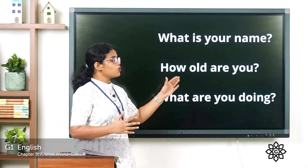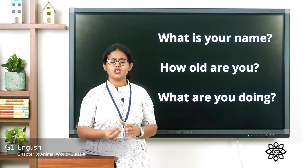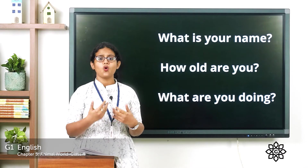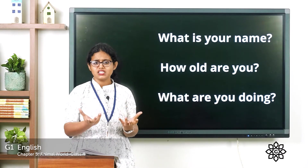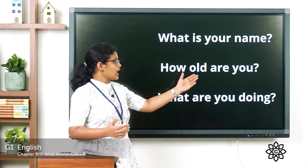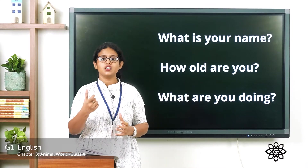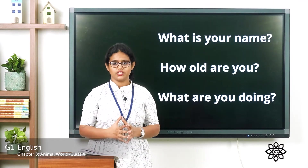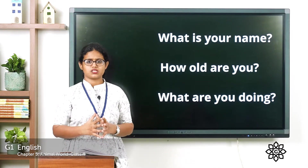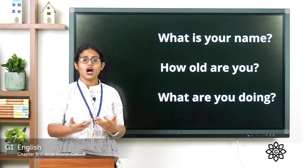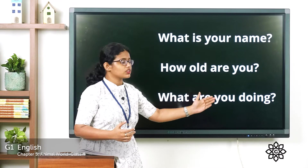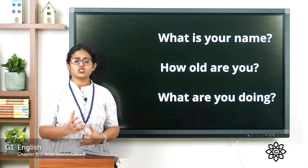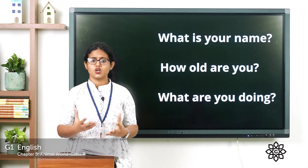The next one: 'How old are you?' This is also a question — it asks what your age is, and there is an answer for it, so it ends with a question mark. Next: 'What are you doing?' This is also a question; it asks what you are doing and it ends with a question mark.